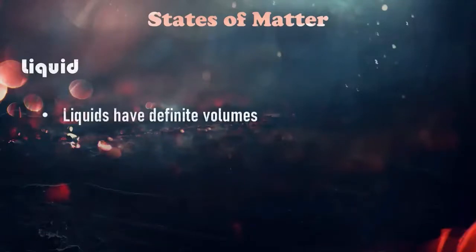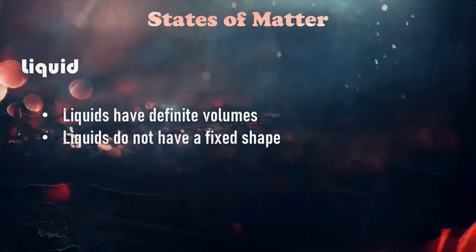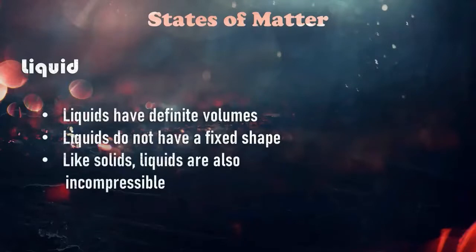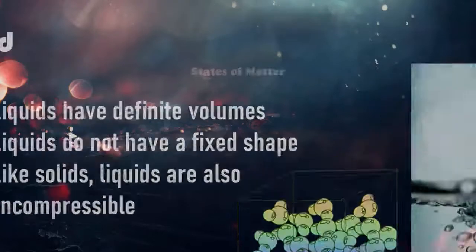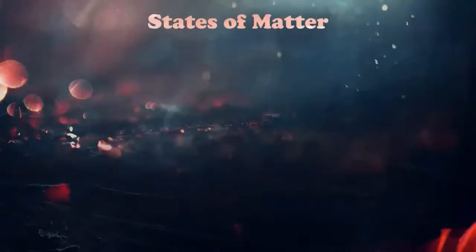The second one is liquid. It has a definite volume. Liquids do not have a fixed shape because it will only depend on the container. If the container is cylinder, then therefore the shape is cylinder. Or if the container is cube, therefore the shape is cube. Like solids, liquids are also incompressible. And this time the behavior of an atom is not too close from each other. Example: water or any fluid.